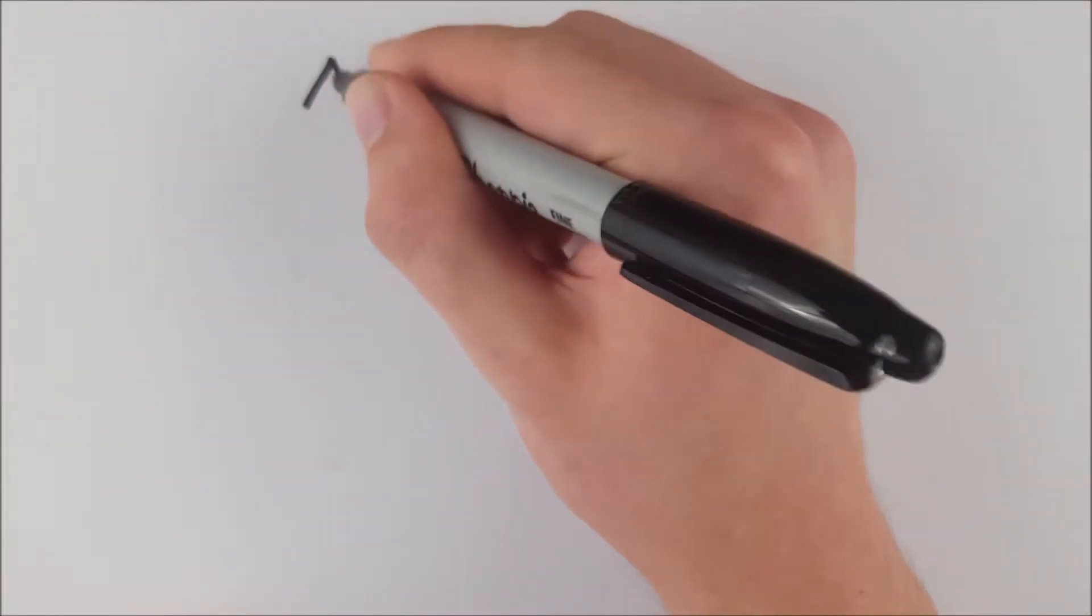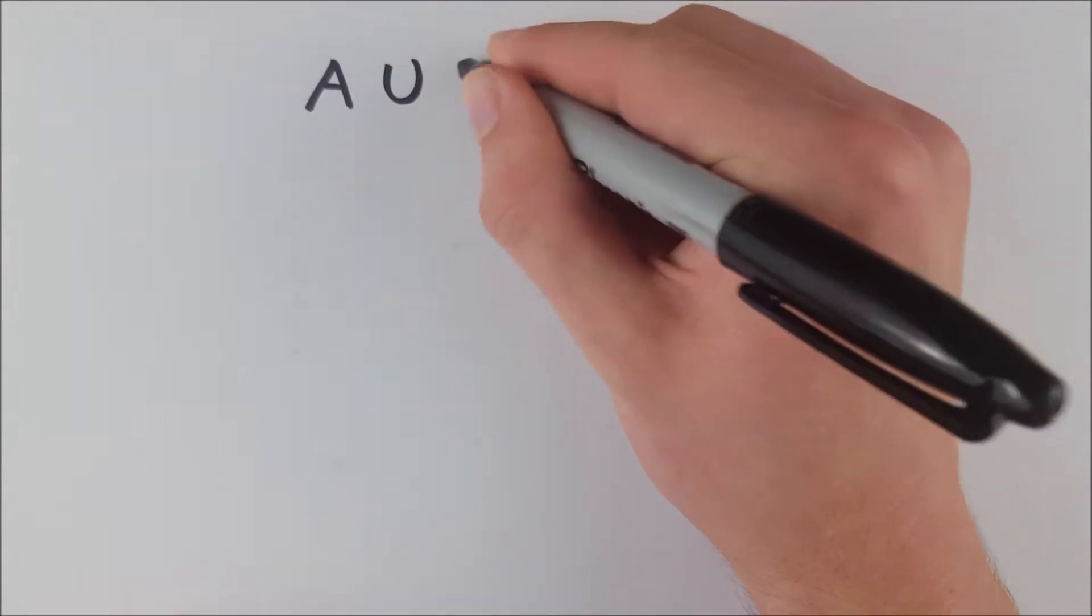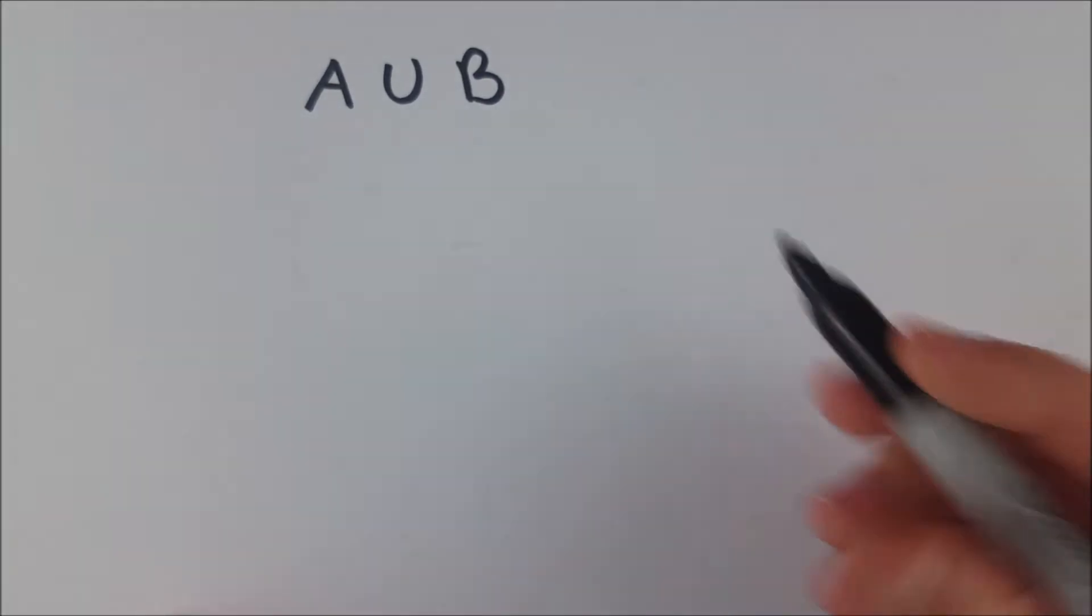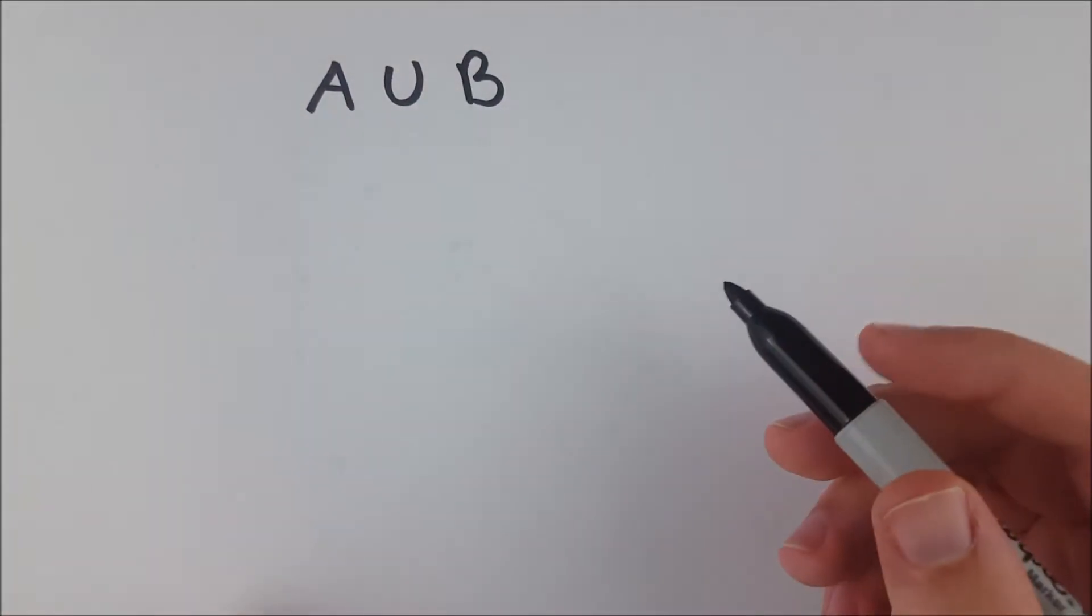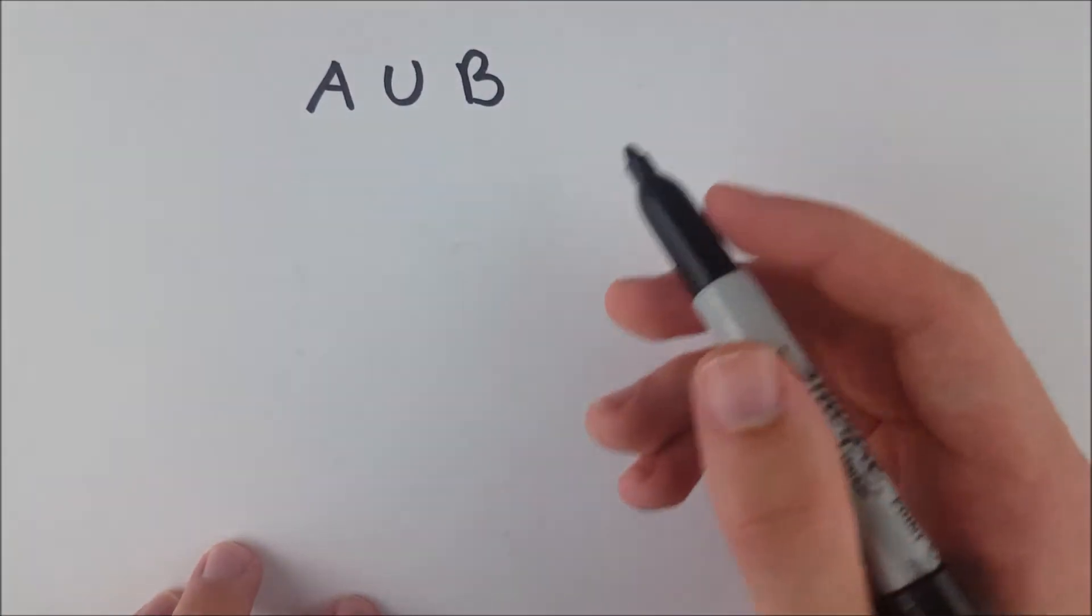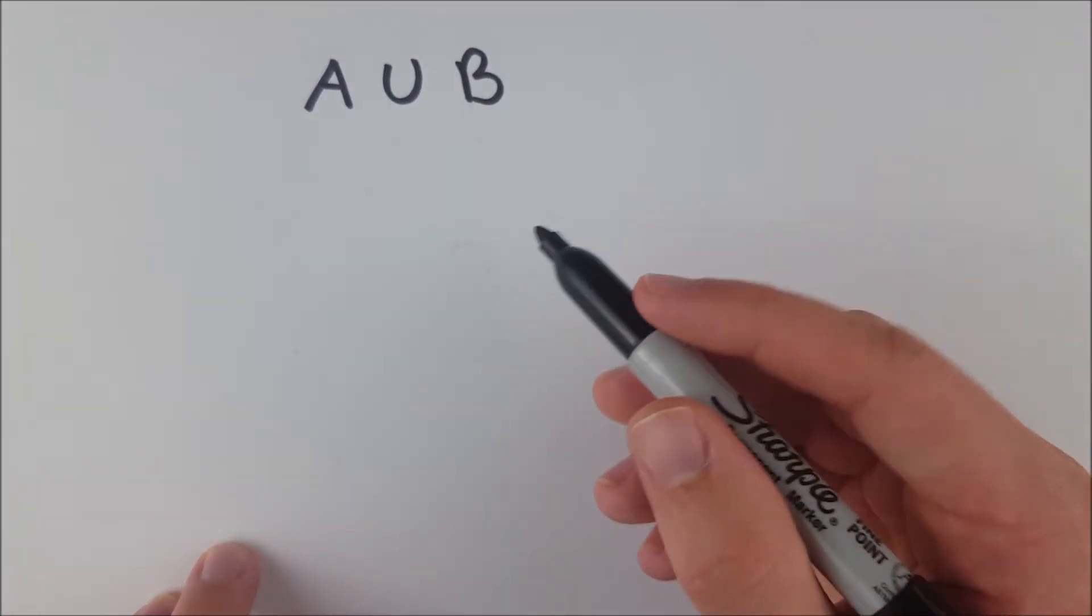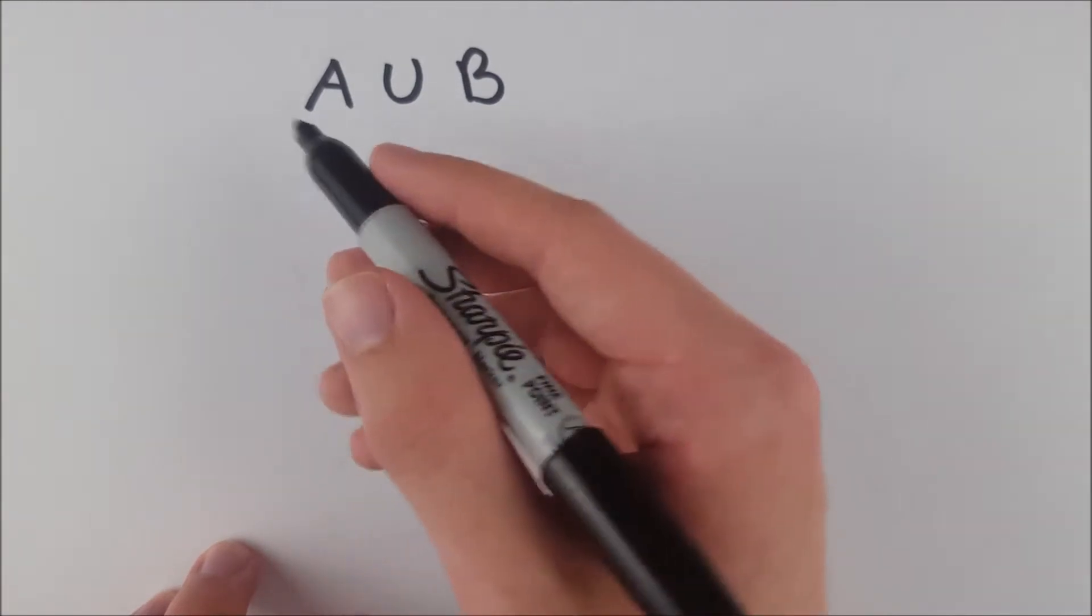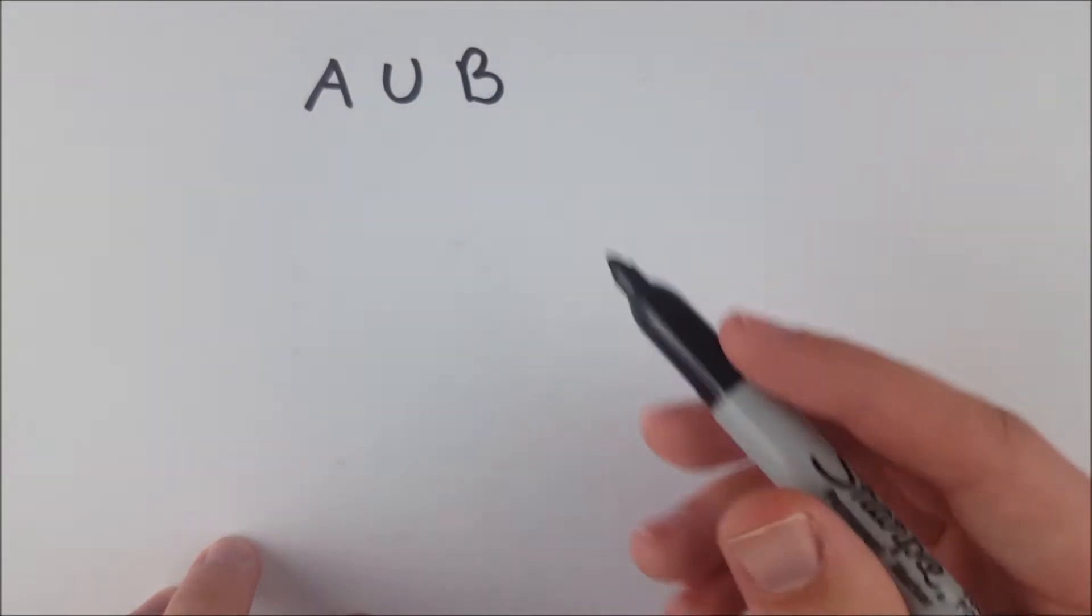So we're considering a set A unioned with B. What does that look like in Venn diagrams? The union operation basically just takes the elements from each set and pulls them together. So the set A union B would have every element in A as well as every element in B.